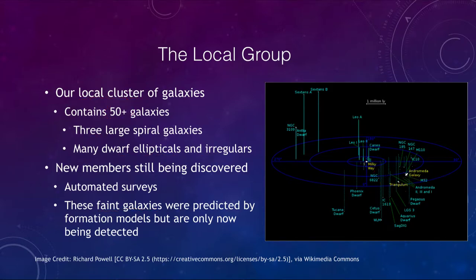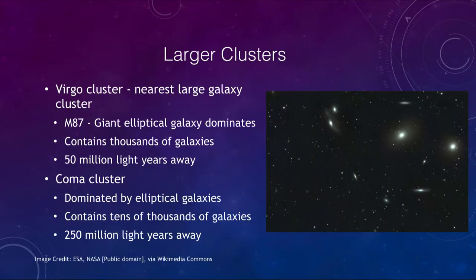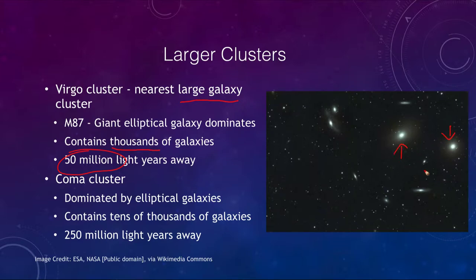The Virgo cluster is the nearest large galaxy cluster, about 50 million light years away. Unlike our local group with about 50 galaxies, this one has thousands of galaxies. Almost every object you see in images of it is a galaxy — even small dots are small galaxies part of this cluster. M87, the giant elliptical galaxy, is the dominant galaxy towards the center of this cluster.